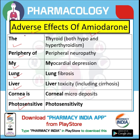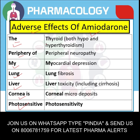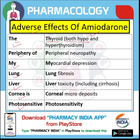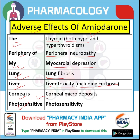From this trick: 'a' denotes the thyroid, which covers both hypothyroidism and hyperthyroidism; 'periphery' denotes peripheral neuropathy; 'my' denotes myocardial depression; 'lung' denotes lung fibrosis; 'liver' denotes liver toxicity including cirrhosis; and 'cornea' denotes corneal micro deposits.